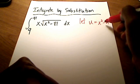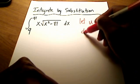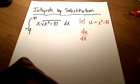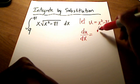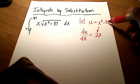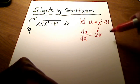So if u is equal to x squared minus 81 then what's the derivative of u with respect to x? Well, the derivative of x squared is just 2x and the derivative of negative 81, that's just a constant, is zero.